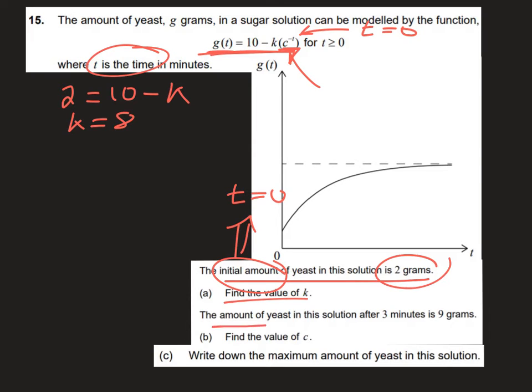In part B, we are told the amount of yeast in the solution after 3 minutes is 9 grams. So we can say that 9 = 10 - k·c^(-3). But we know what k is—k is 8.